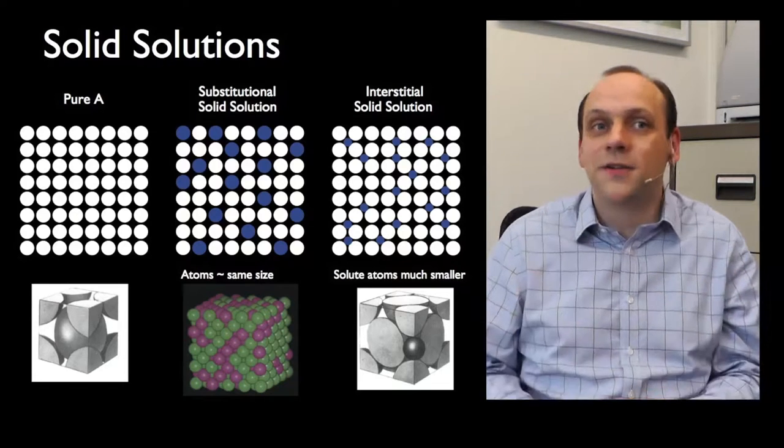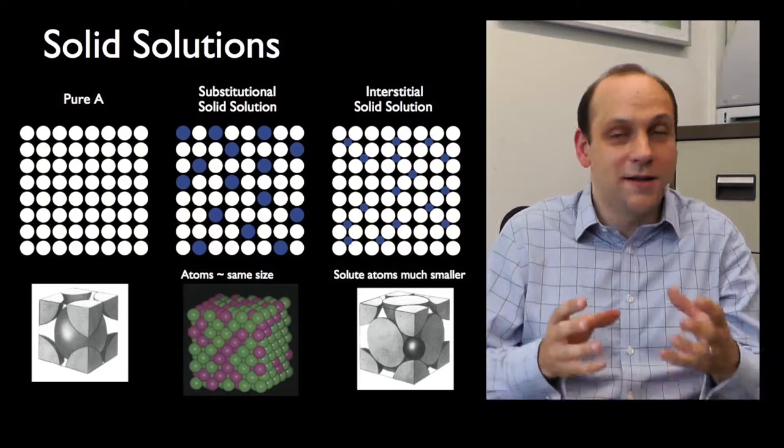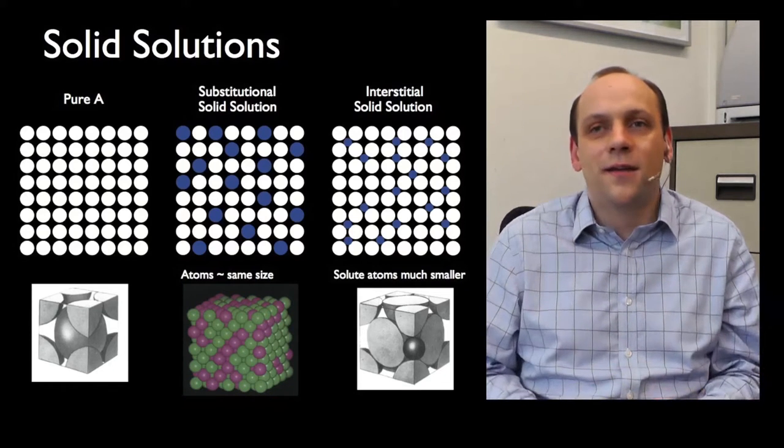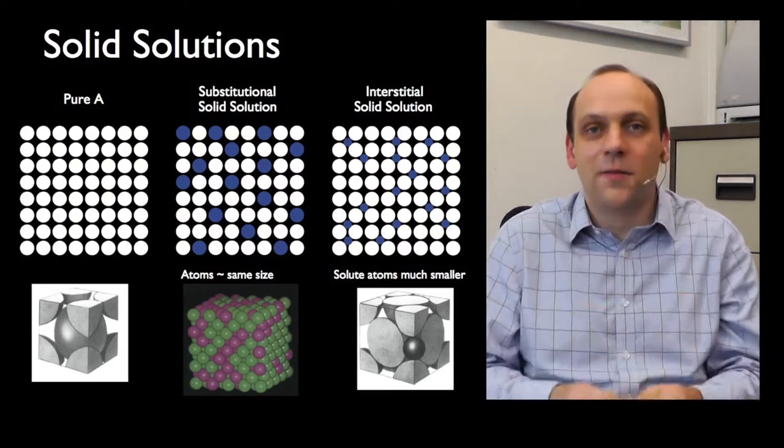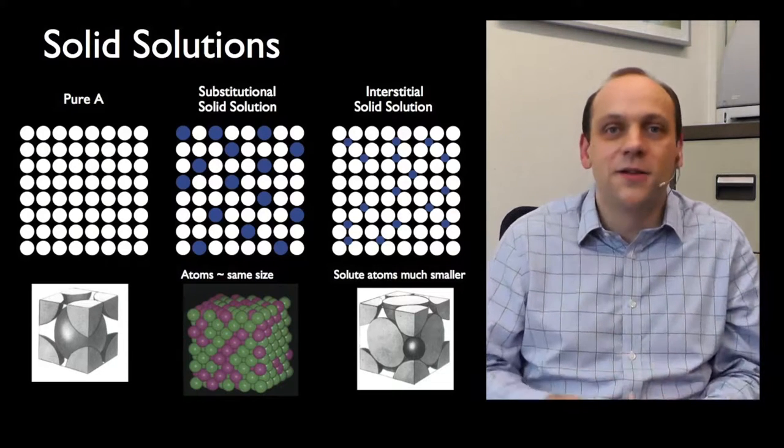Those are both called solid solution alloys. Iron, for instance, quite commonly has carbon in, and even single-phase steels will have carbon in them. They're interstitial solid solutions, therefore.